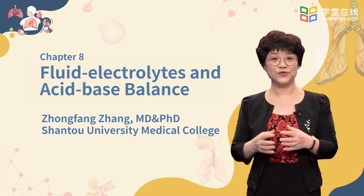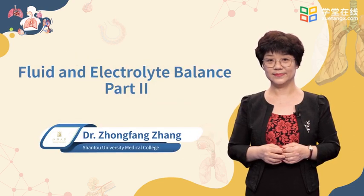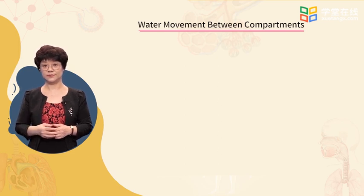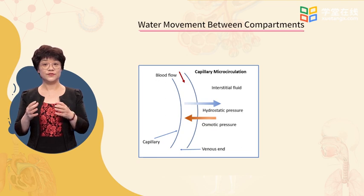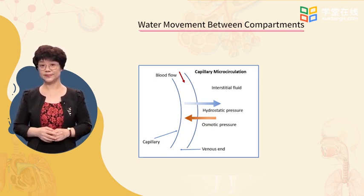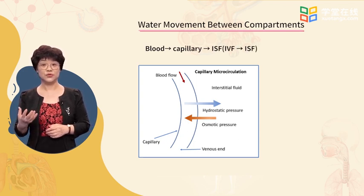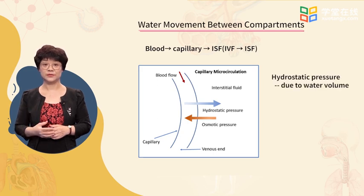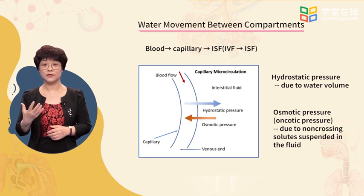Now that we know about the fluid and electrolyte distributions in the body, let us talk about water movements between compartments at the capillary microcirculation level. This is the area where significant fluid exchanges happen. Fluid exchanges occur because of two pressures at work: hydrostatic pressure due to the water volume, and osmotic or oncotic pressure.